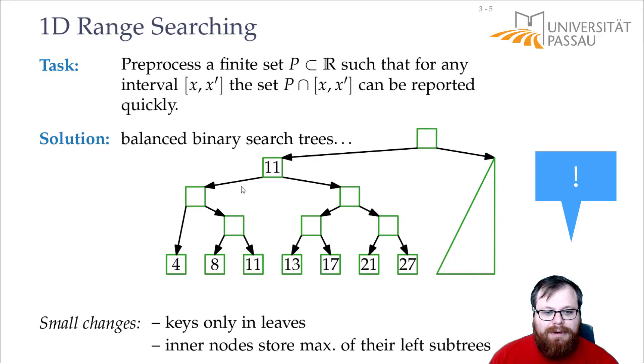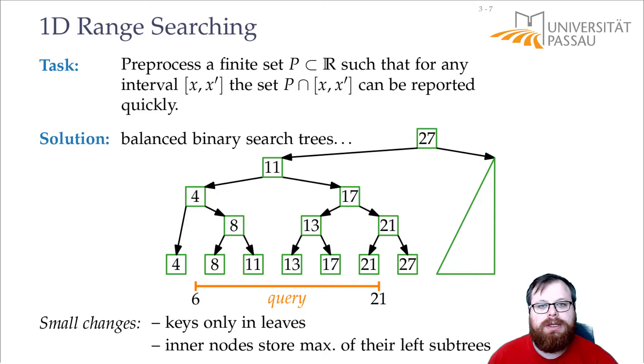So these are all the elements we want to store, and in the internal vertices we only store what is the maximum element in my left subtree. So here we would want to store an 11, here a 4, here an 8, here a 13, 17, 21. And now if you give me a query, for example give me all the elements between 6 and 21, how do I solve this?